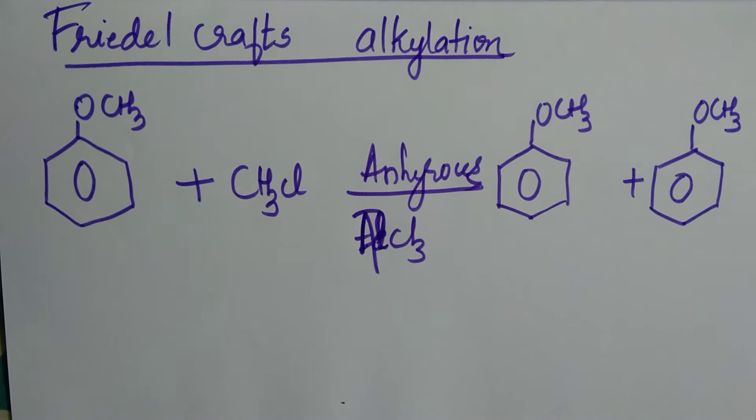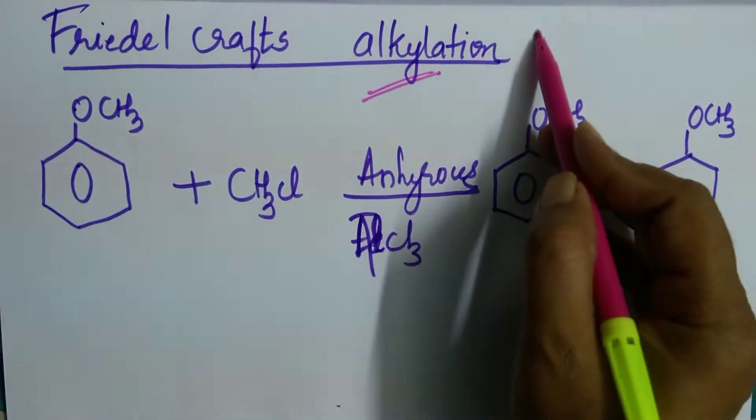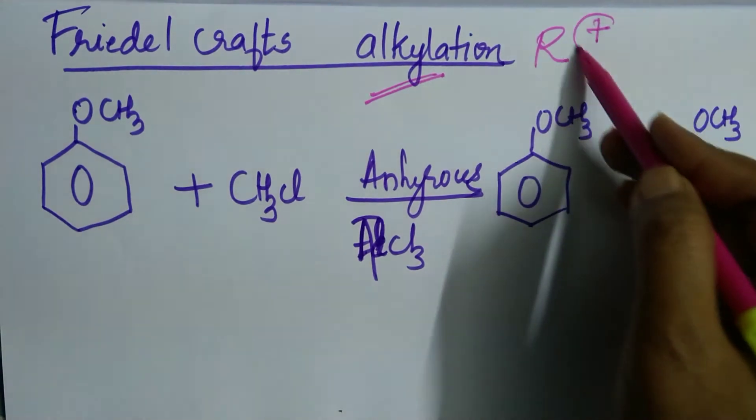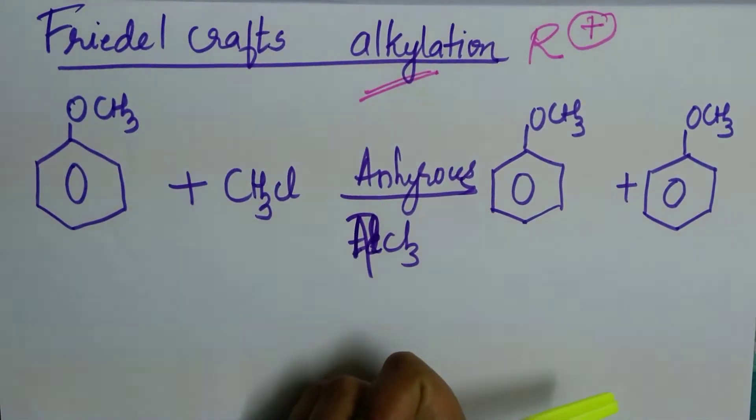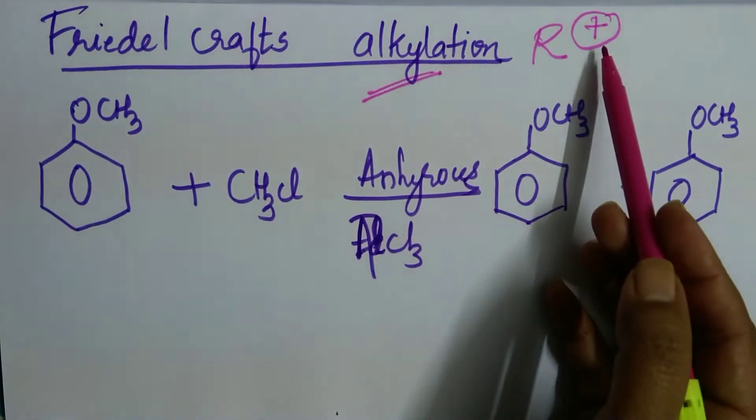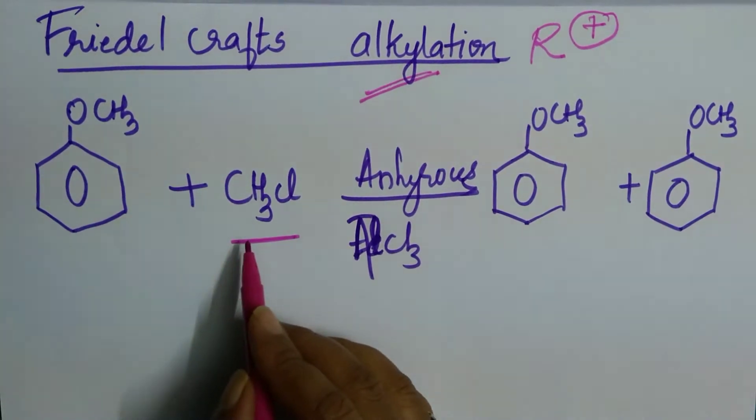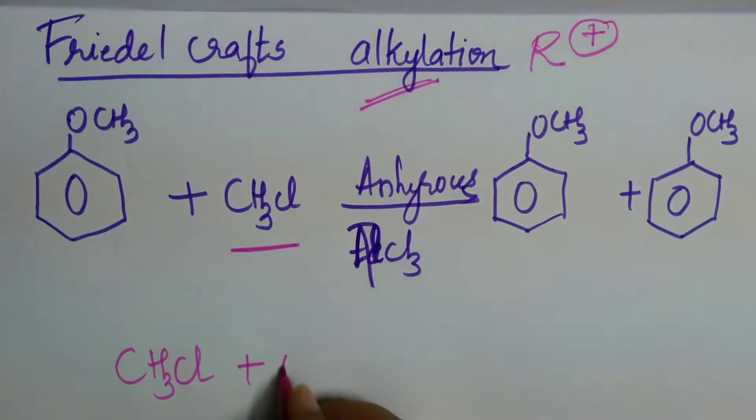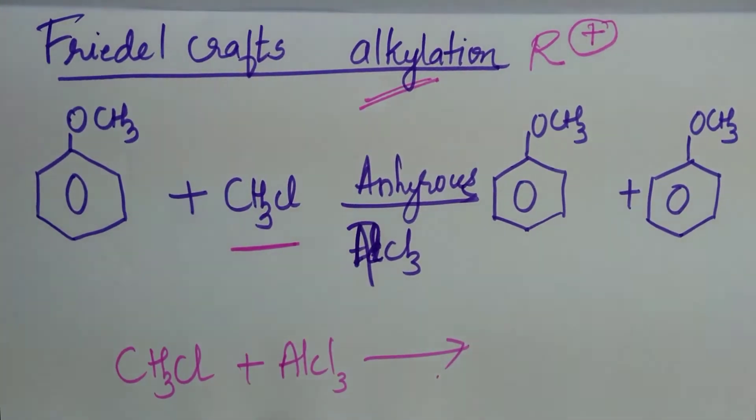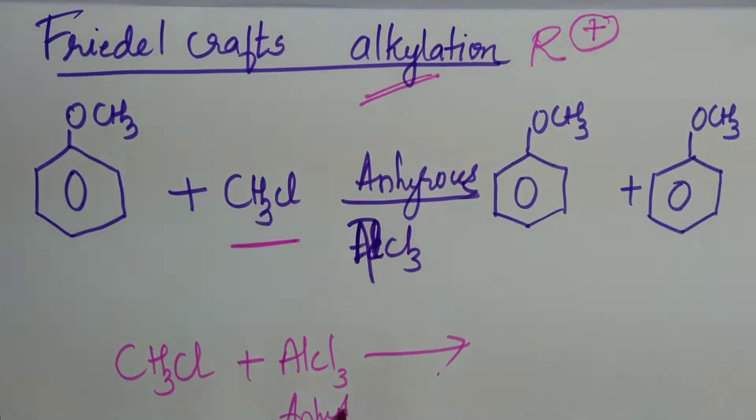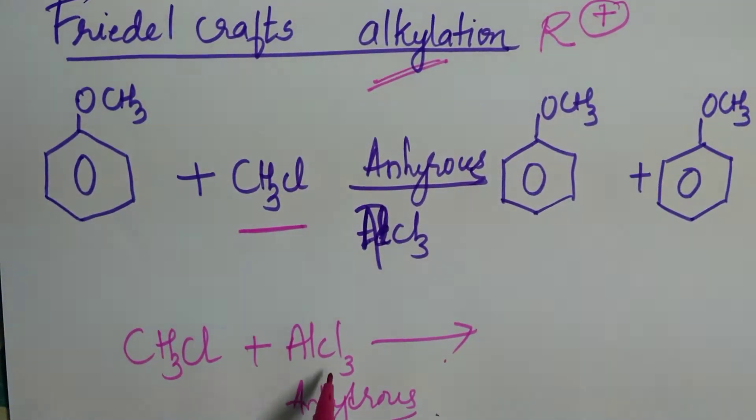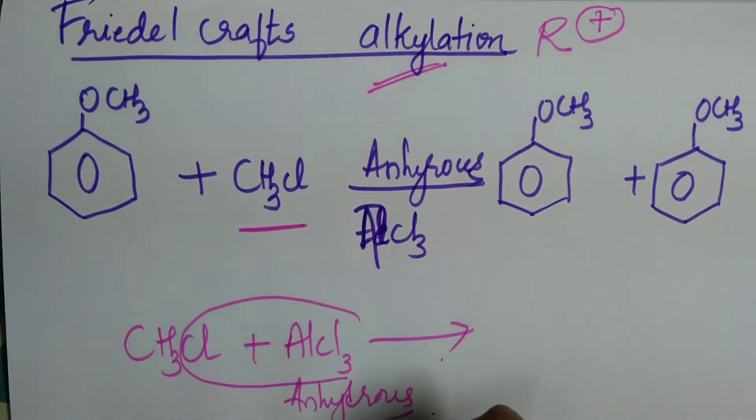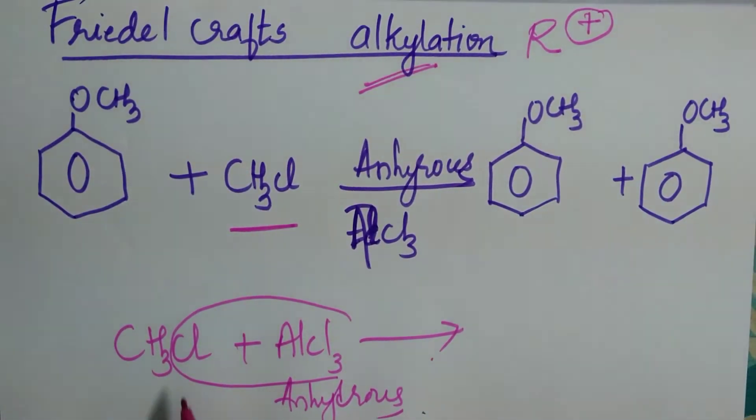Next reaction is Friedel-Crafts alkylation. What is alkylation? Introduction of an alkyl group into the benzene ring. So what is the charge it should carry? It should carry a positive charge. Why? Because at ortho and para position we have negative charge. So how to generate an alkyl group having a positive charge? I have taken an example of an alkyl halide, that is methyl chloride. When an alkyl halide is treated with anhydrous AlCl3 - anhydrous means devoid of water molecule - what it will do is it will take away Cl with it. It acts as a Lewis acid. What is Lewis acid? Something which accepts a pair of electrons.